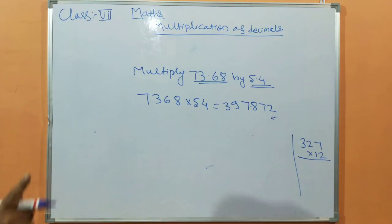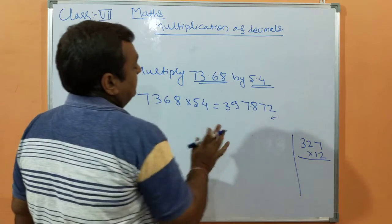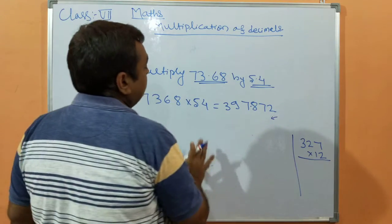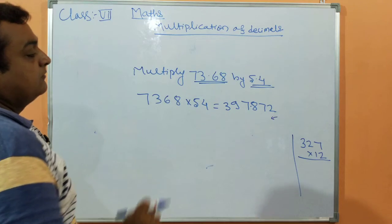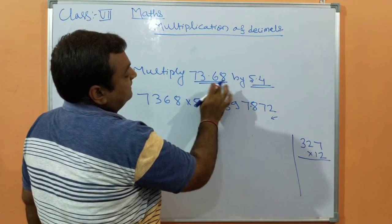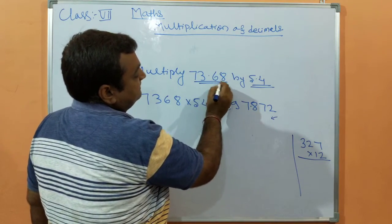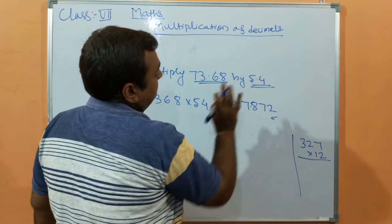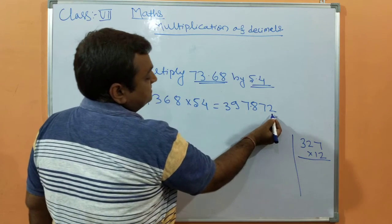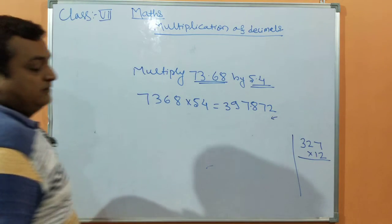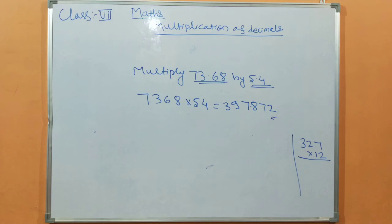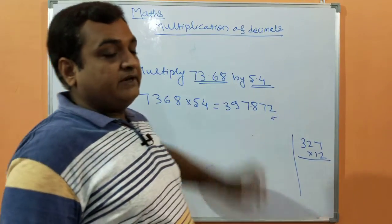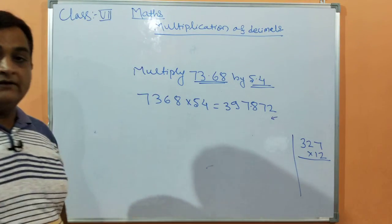Look at the decimal digits: one, two, three. Three digits total after the decimal. From the left side of the product, count one, two, three. The answer is 397.872. In this way, you can solve the exercise on multiplication of decimals. Good day.